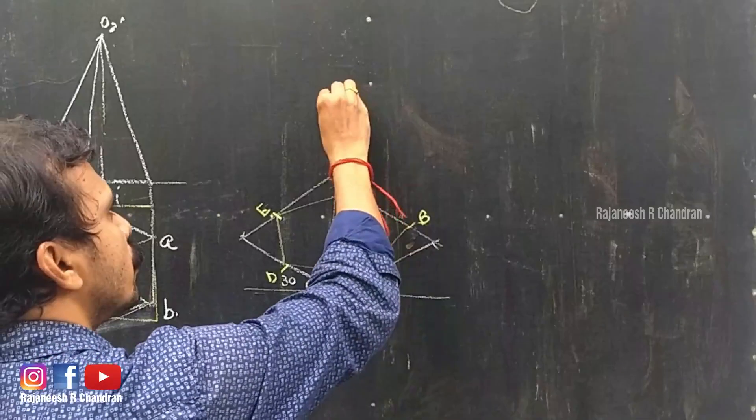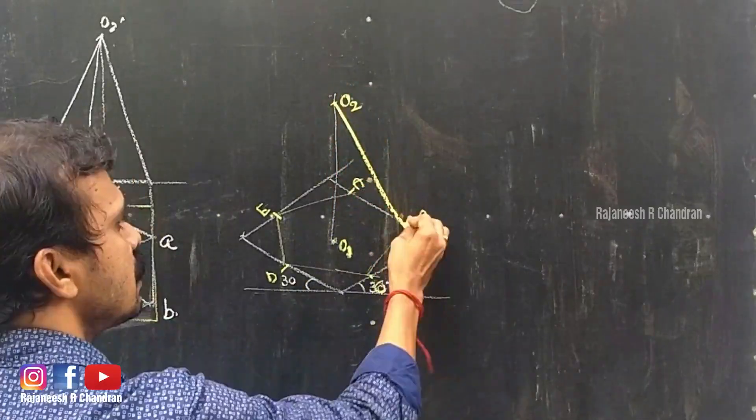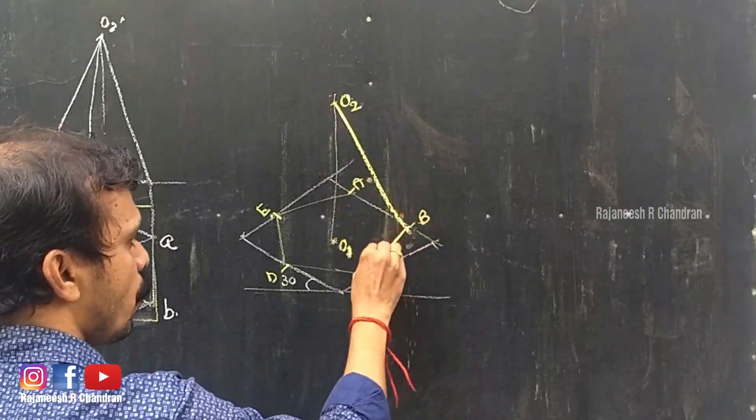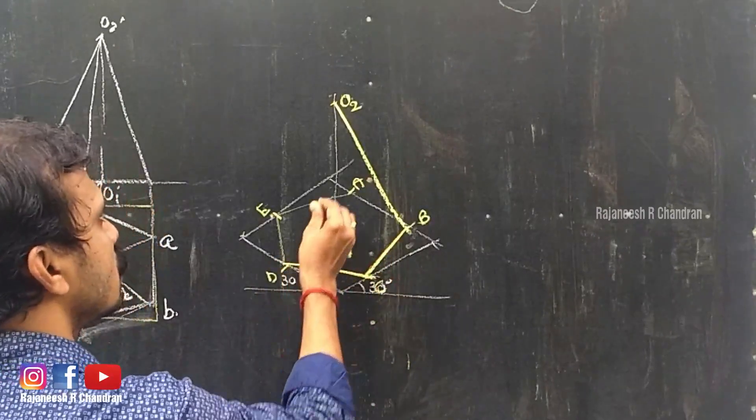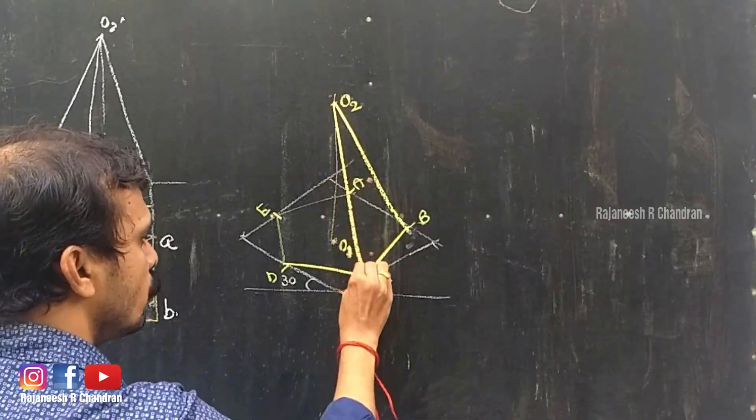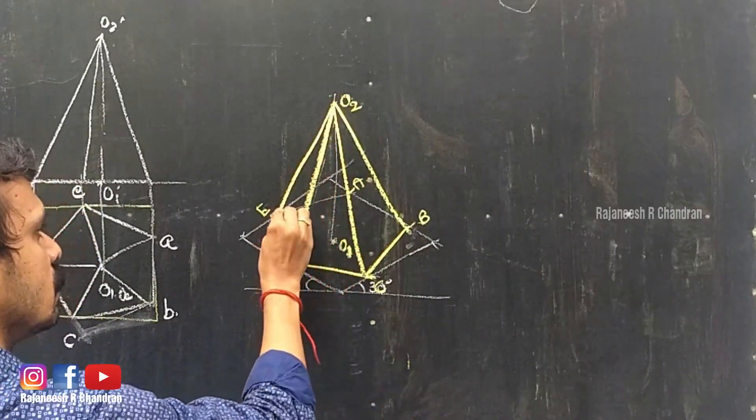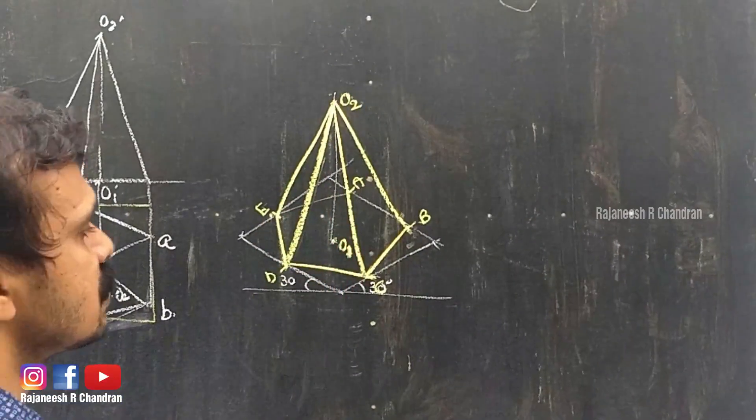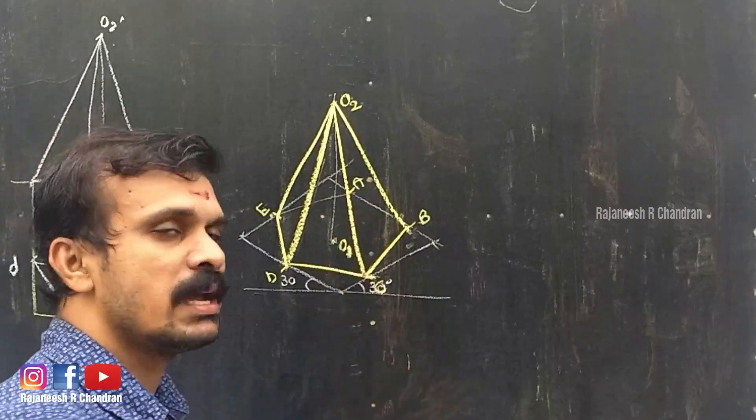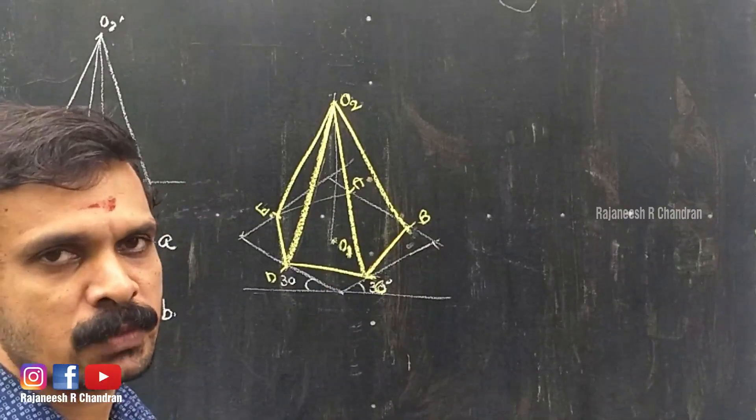Now you can connect O2 with B. Connect O2 with C, connect O2 with D, connect O2 with E. This is enough because the invisible lines are not marked in isometric view and isometric projection.